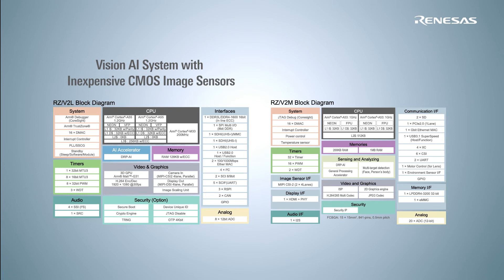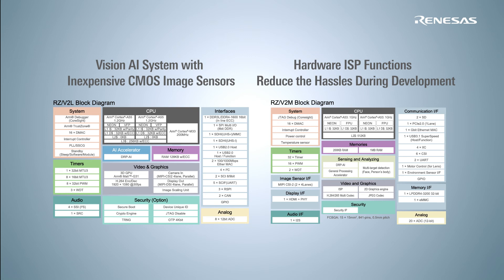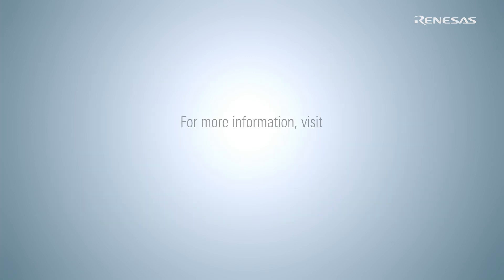On the other hand, the RZ-V2M microprocessors provide hardware ISP functions that are tuned by experts beforehand to reduce the hassles during development. Visit www.renesas.com/RZ-V for more information.